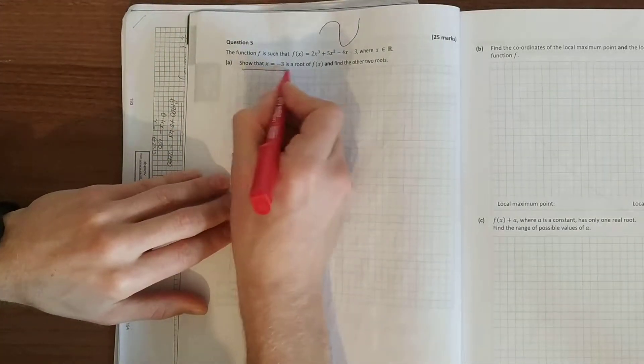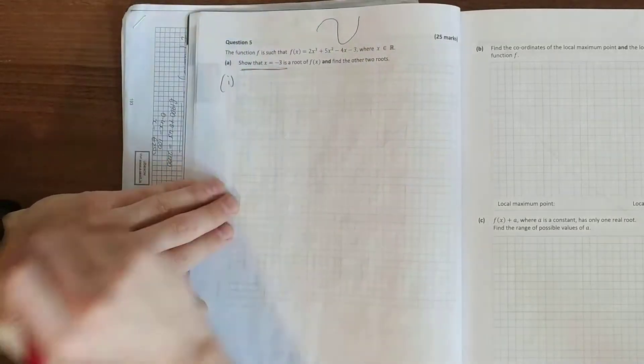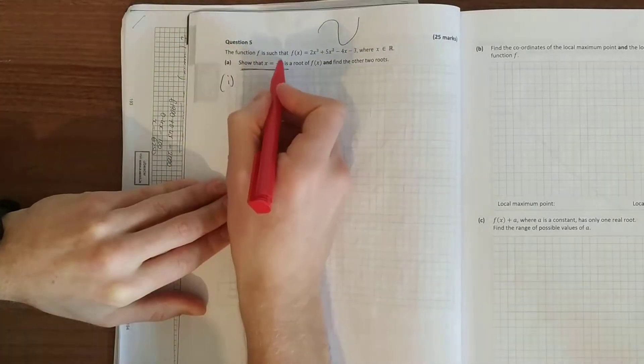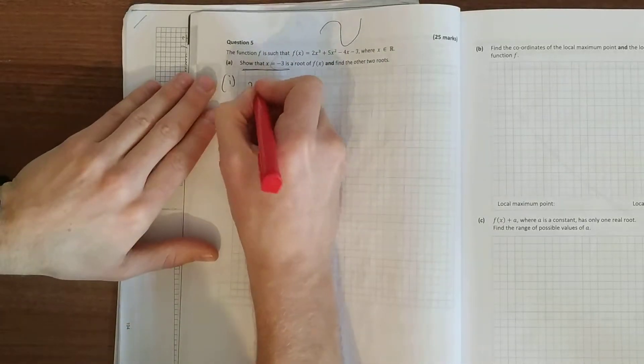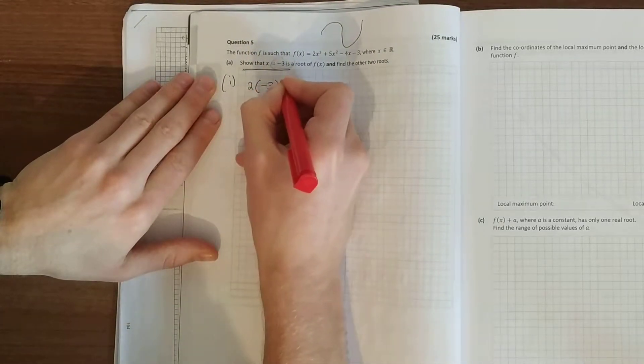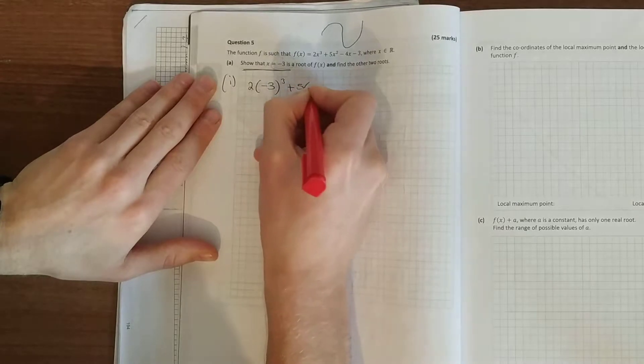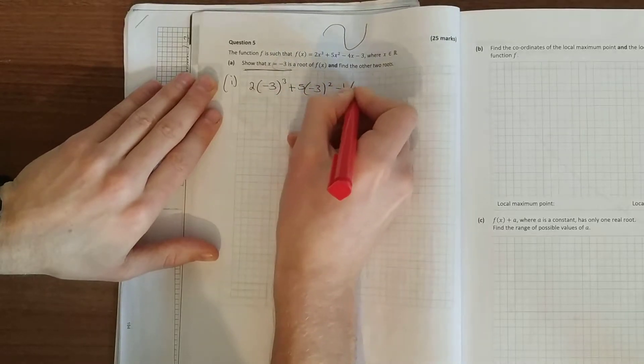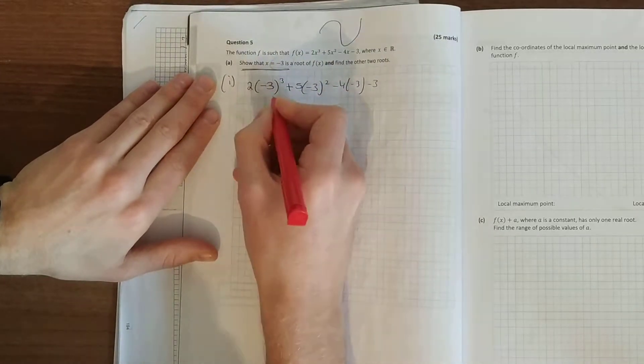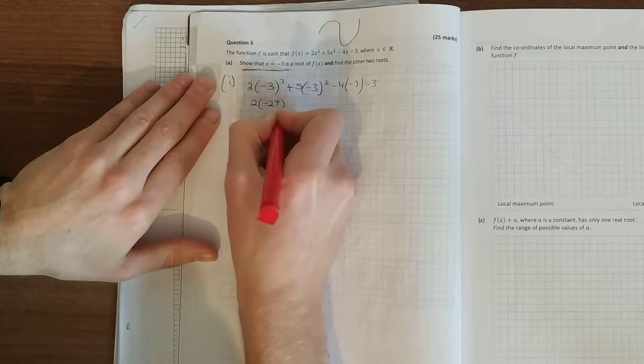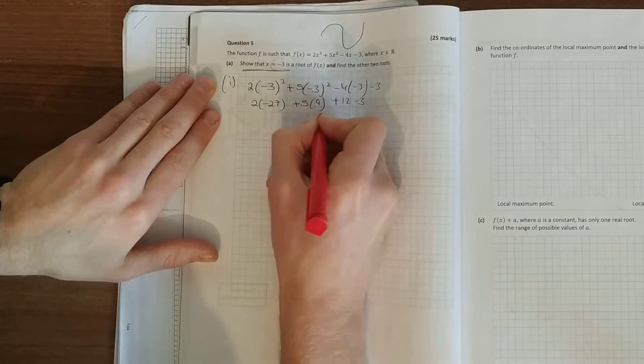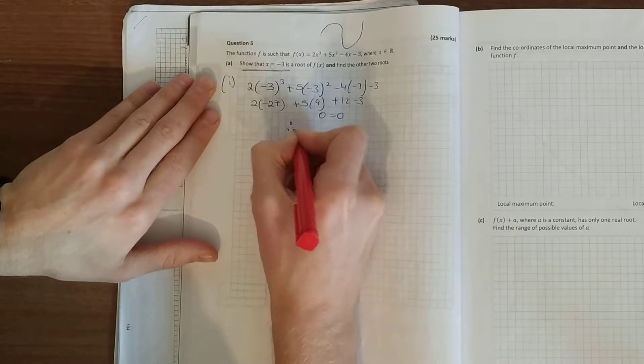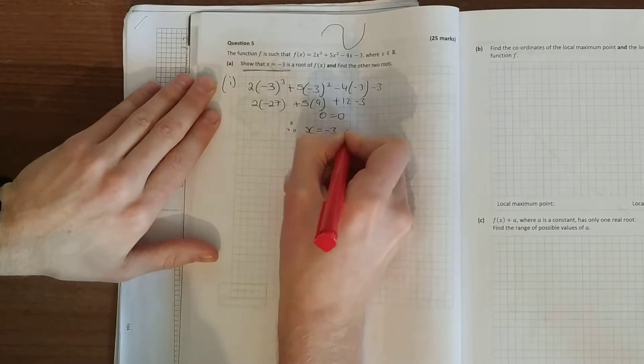Show that x is equal to minus 3 is a root, so the first bit, show that it's a root. In order to show that it's a root, this here value is on the function, so just sub it in. And when that occurs, 0 is equal to 0, therefore x equal to minus 3 is a root.